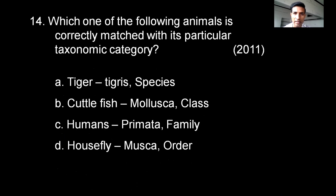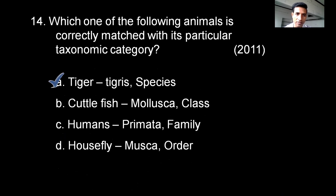Which of the following is correctly matched with its particular taxonomic category? Tiger — tigris, species; cuttlefish — Mollusca, class; humans — Primata, family; housefly — Musca, order. The correct option is tiger — tigris — species.